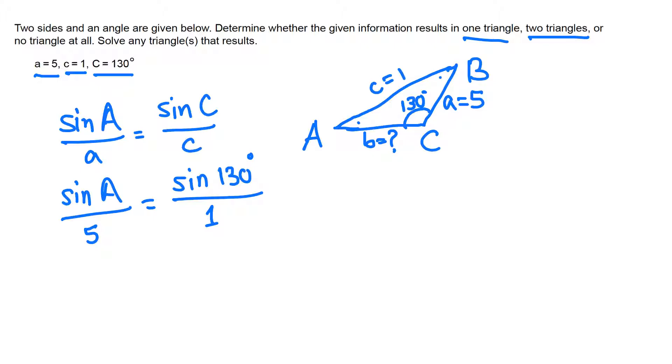We have one fraction in the left hand side and one fraction in the right hand side, so we can cross multiply. Note that we are trying to find angle A. This gives sine A equals 5 times sine 130°.